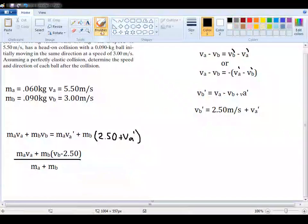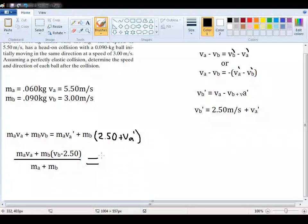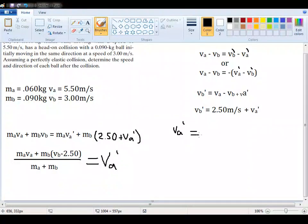And now, all this is now equal to our VA prime. And all of these values here are all variables for which we already have the numbers. So plugging these into your calculator, for VA prime, you should get 2.50 meters per second for the speed.